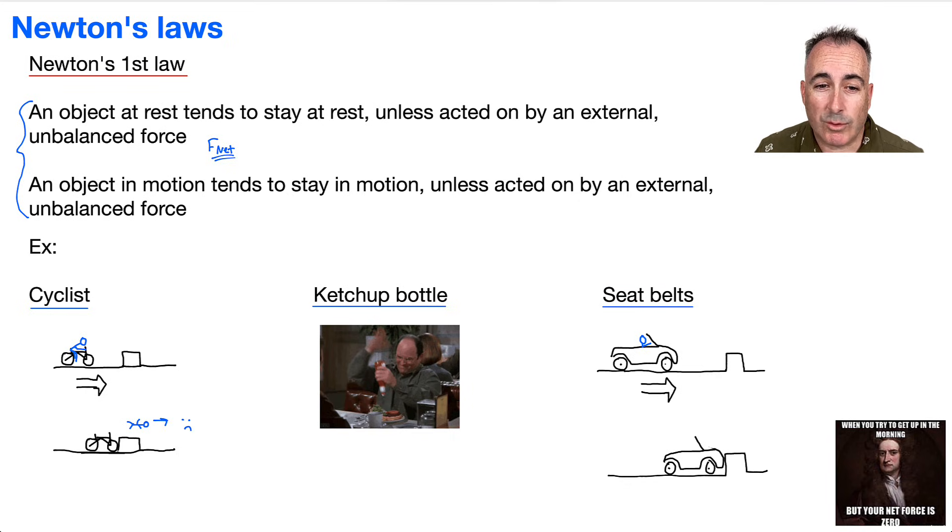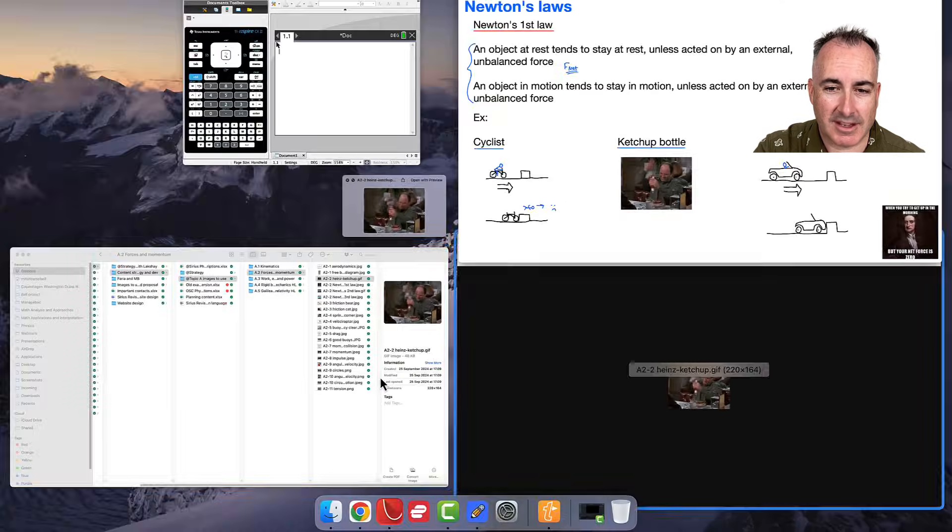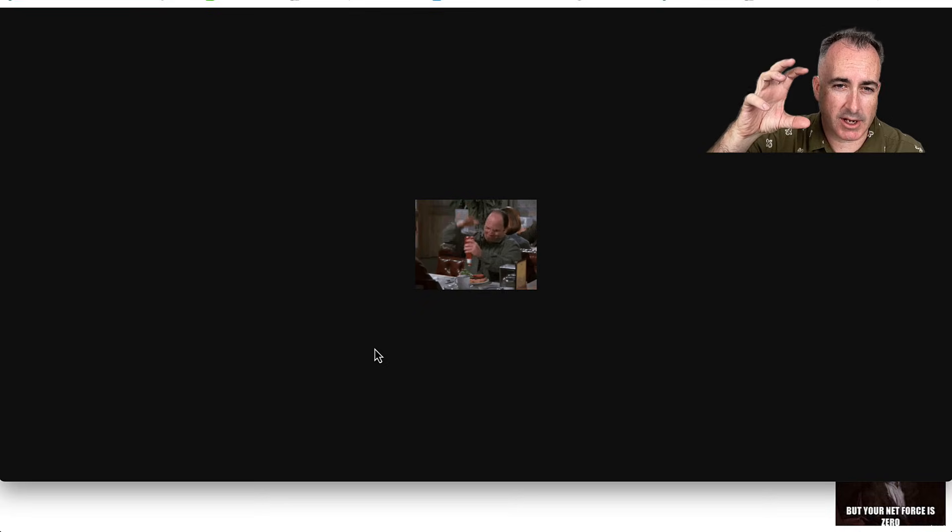So another application of Newton's first law is with a ketchup bottle. I don't know if you've ever seen the show Seinfeld, but I love it like this right here where George Costanza is trying to get the ketchup out. Because this is actually very much related to what we need to talk about. He's trying to get the ketchup out of the bottle. And do you notice what he's doing? He's actually hitting the bottle up. But if he hits it like this, he's just forcing the ketchup to basically go back into the base of it. So that's lousy. That doesn't work.